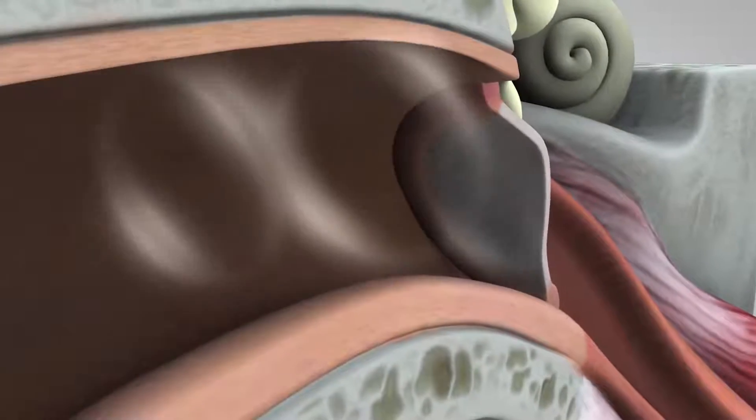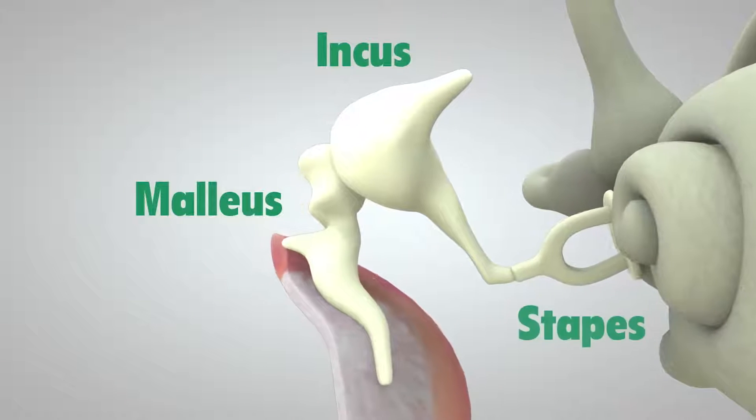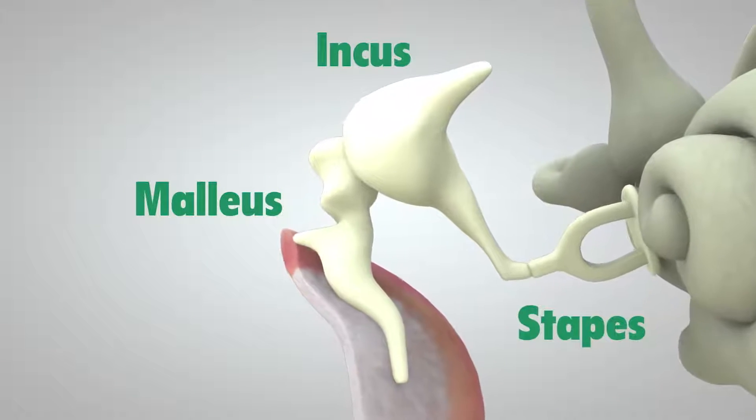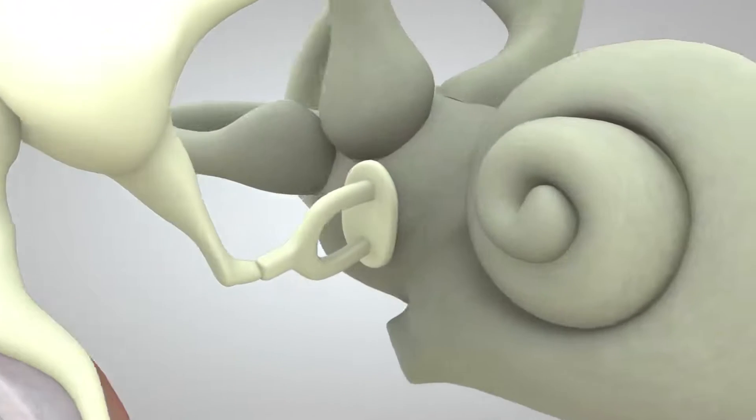They make the eardrum vibrate, which in turn vibrates three tiny bones called the malleus, incus, and stapes. These bones amplify or increase the sound vibrations and send them to the cochlea.